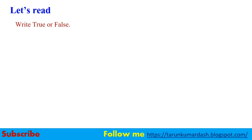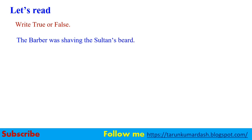Write true or false. You have to find out whether these statements are true or false as related to the story. Statement one: The barber was shaving the sultan's beard. As you know, the barber was not shaving the sultan's beard — the barber was shaving the sultan's head. So this sentence will obviously be wrong — false. Next: the sultan gave him three gold coins.